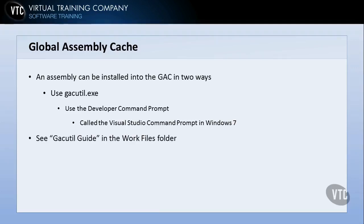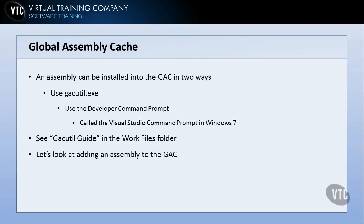Before we go to part two, I've put a GAC utility guide out in the work files folder — GACUTIL guide — it's a PDF file. Look for it in the work files folder. It gives you all the various options and switches you can use. Now let's go to part two and add an assembly to the Global Assembly Cache. Join me in part two and we'll take care of that.